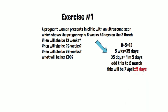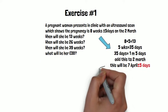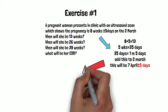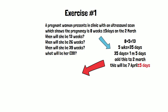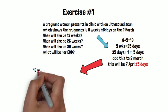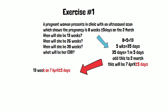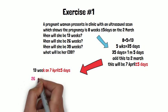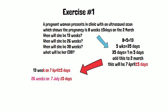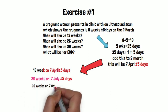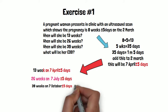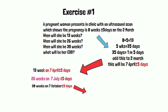We will calculate the 13-week date first. If we add 5 weeks to 8 weeks we get 13 weeks. Five weeks is equal to 35 days or one month and 5 days. Adding this to the 2nd of March, she will be 13 weeks on the 7th of April. Her 26th week will be on the 7th of July, and her 39th week will be on the 7th of October. Her expected date of delivery will be the 14th of October, and for every date we add plus or minus 5 days as per her first ultrasound scan.